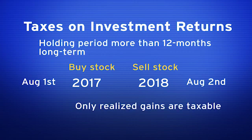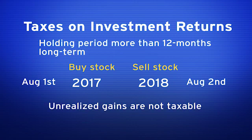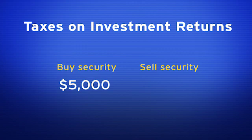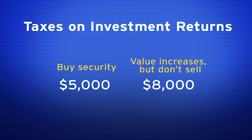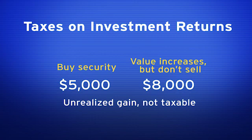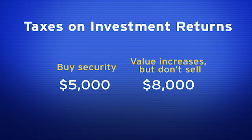Remember, only realized gains are taxable. Unrealized gains are not taxable. What's the difference? If I buy a security for $5,000 and later sell it for $8,000, that's a realized gain of $3,000. But if I buy a security for $5,000 and it increases in value to $8,000 but I do not sell it, that is also a $3,000 capital gain — but it is an unrealized capital gain, which is not taxable. For gains to be taxable, they must be realized, which means the securities must be sold.